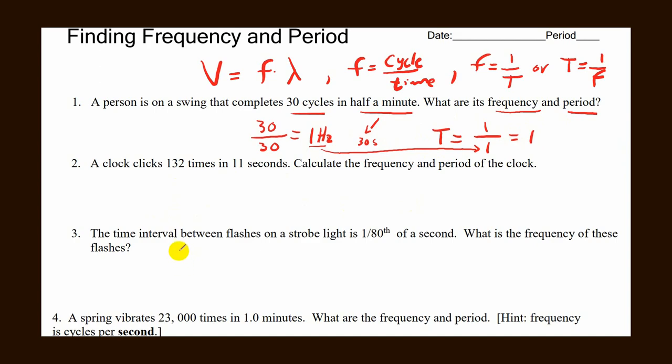Number 2 would be the same. Number 3 is a little bit different. So number 3, we're just looking for frequency. It gives you a flash of light. It's very fast, 1 over 80th of a second. So frequency would be that cycle, 1 divided by 1 second. You should get 0.0125, and this will be in hertz.